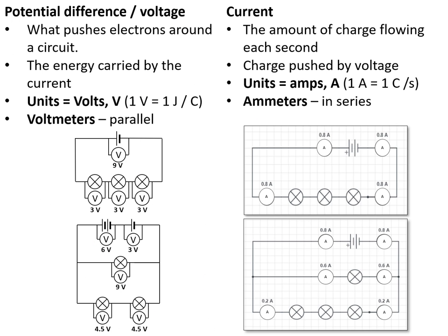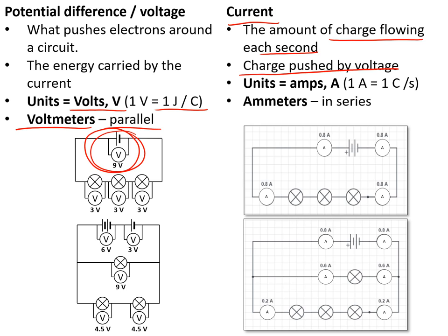Potential difference, or voltage, is what pushes electrons around a circuit. It is the energy carried by a current, measured in volts — one volt equals one joule per coulomb — and it is measured using a voltmeter connected in parallel to whatever you are measuring. Current is the amount of charge flowing through a circuit each second, created by the voltage pushing the electrons around. It is measured in amps using an ammeter connected in series.